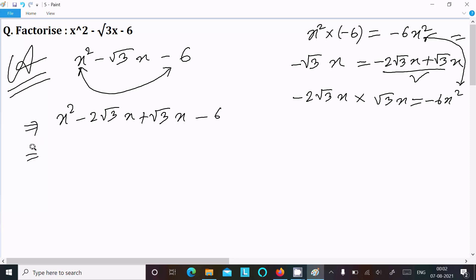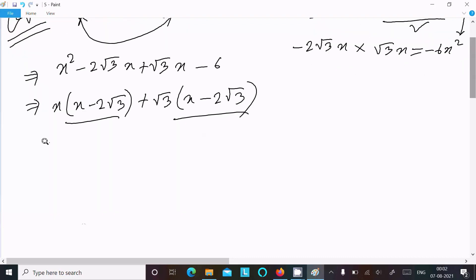Now take x common: x(x - 2√3). Take √3 common: √3(x - 2√3). Since (x - 2√3) is common, it becomes (x - 2√3)(x + √3).